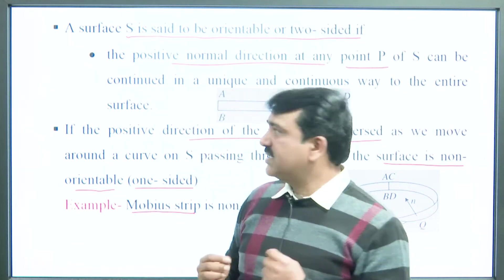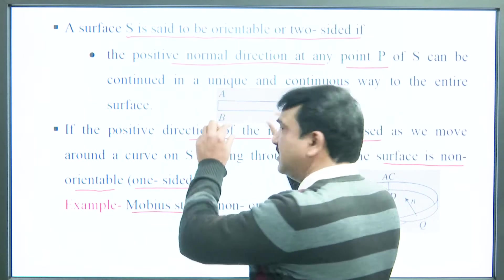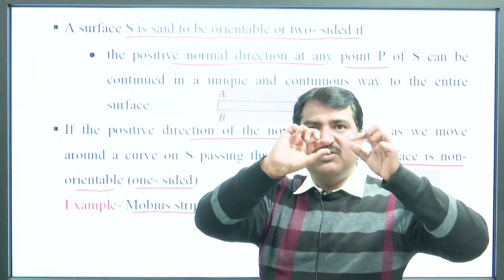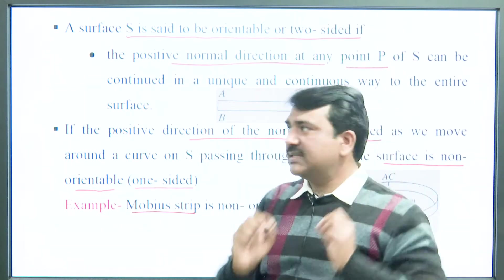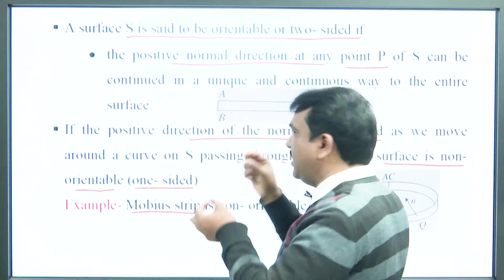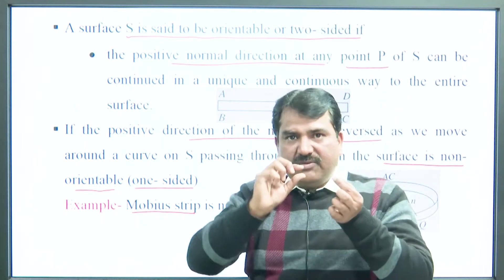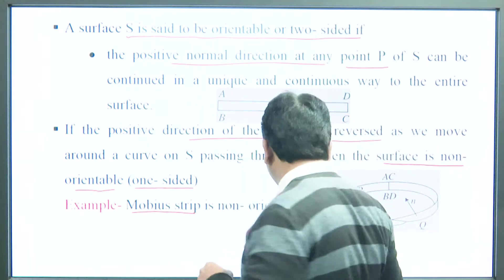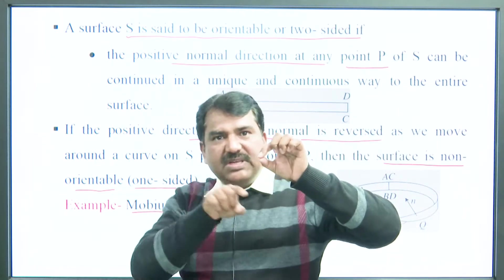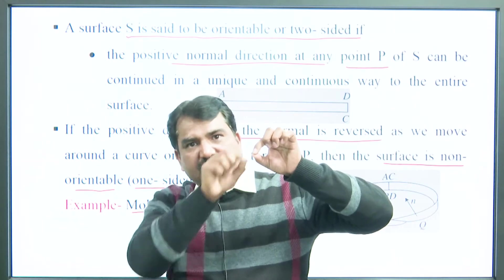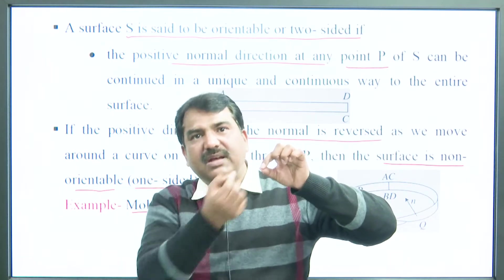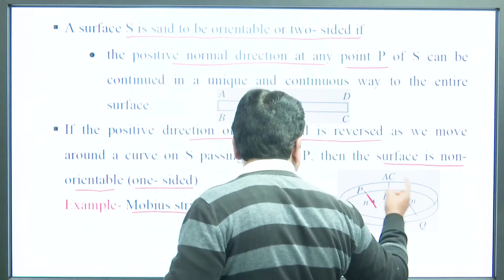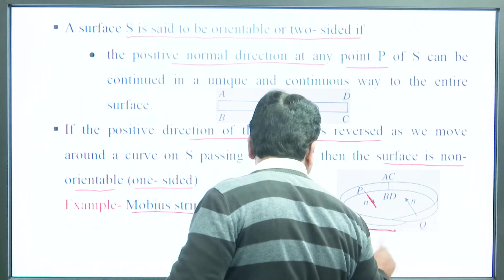To form the Möbius strip: take a strip, twist it, and join A to C and B to D. The resulting shape is the Möbius strip — and if you move along it, the normal direction at one point will be opposite to the direction at another point, confirming it is non-orientable.